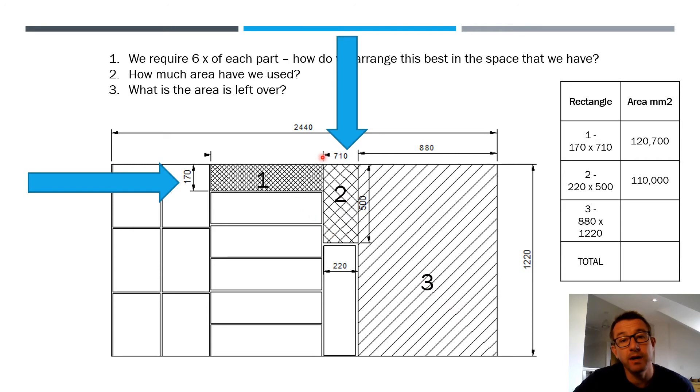So the first rectangle is 710 by 170, or here I've done it 170 millimeters by 710 millimeters, which gives me this calculation of 120,700 millimeters. The second rectangle is 220 millimeters wide by 500, gives me another calculation. And thirdly, I'm going to leave you to work out this and then total this up, because on the next slide there's a different way of presenting the work and organizing our work to see if it's better this way or another, and your job is to calculate that.